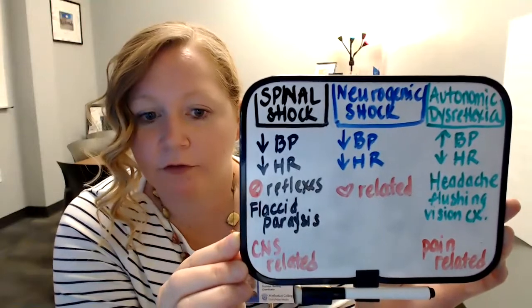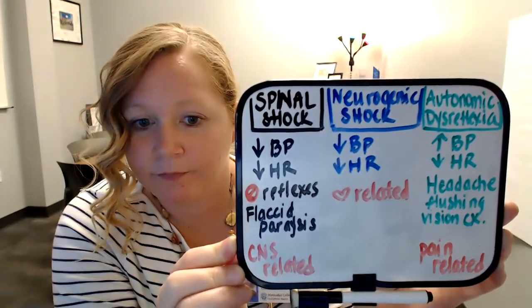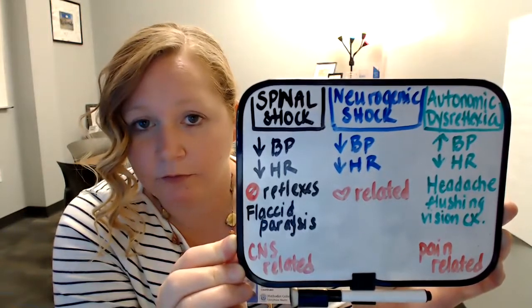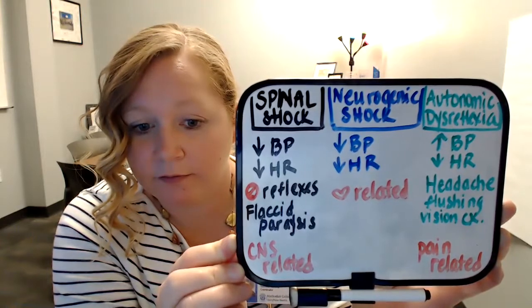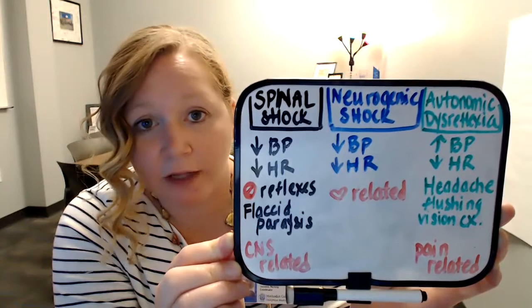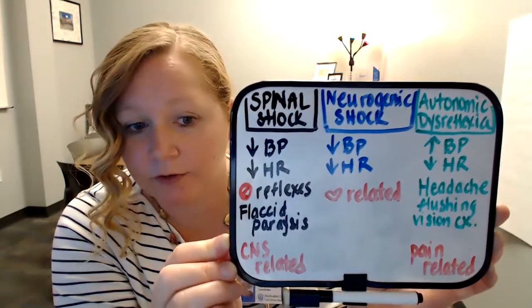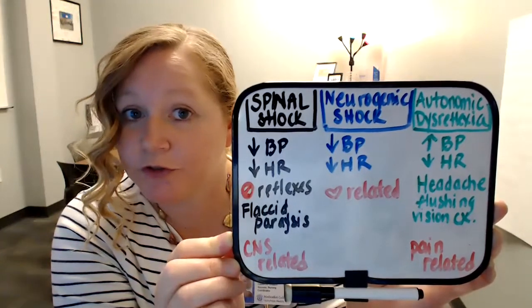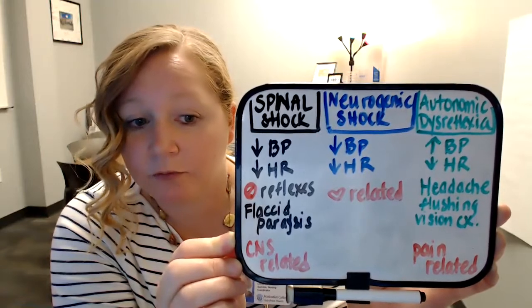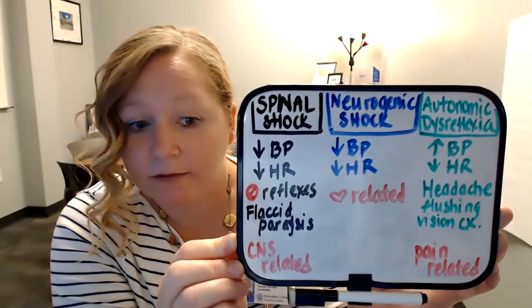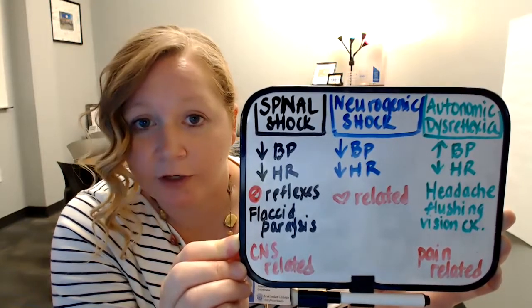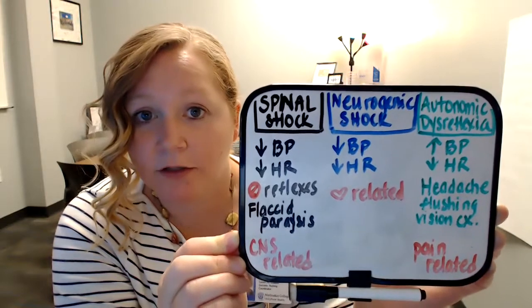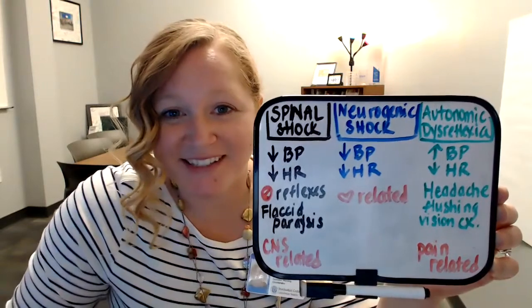To have them all together on one chart — the shocks are going to have low blood pressure and low heart rate. Spinal shock will have no reflexes below the level of the injury and flaccid paralysis; neurogenic shock generally doesn't have that. Autonomic dysreflexia is related to a pain stimulus with a dysreflexic response — blood pressure skyrockets, heart rate goes down, and you get headaches and flushing. You need to figure out what's causing that pain. Hopefully having these side by side helped. Let me know if you have any questions — have a good one, guys.